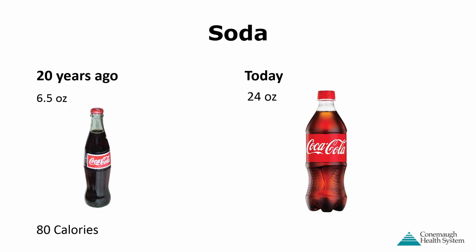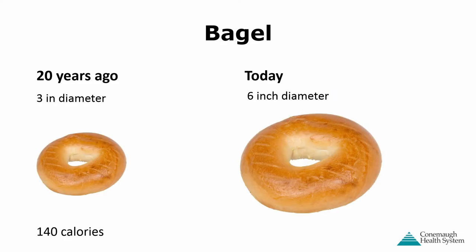Soda: 20 years ago, a 6.5-ounce bottle was about 80 calories; today a 20-to-24-ounce bottle gives us about 270 calories. Calories are really easy to drink — we can mindlessly increase them throughout the day without feeling like we're eating a lot. Swapping out a soda once or twice a day can really decrease the number on the scale. Bagels: 20 years ago, a 3-inch bagel was 140 calories; today they've doubled in size and calories — and that doesn't even include flavored cream cheese or extra butter.